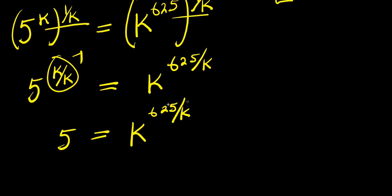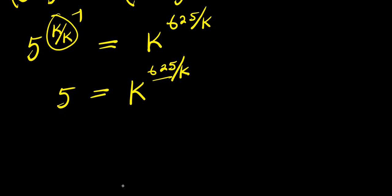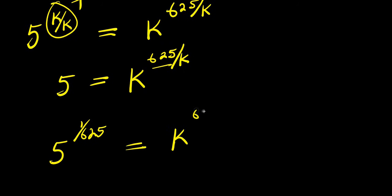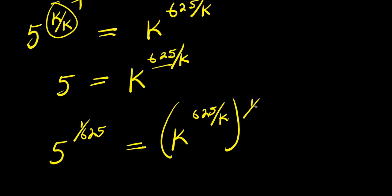So the next step would be to eliminate 6/5 from this part here. So we have 5 to the power of 1 over (6/5) equals k to the power of (6/5 divided by k), and this is raised to the power of 1 over (6/5).